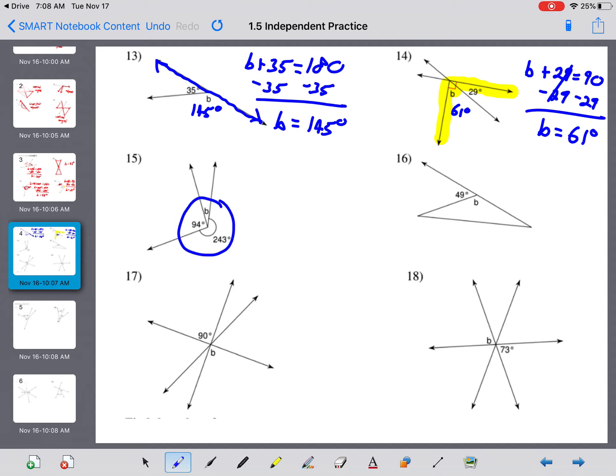Here again, we have that one with the circle. So B plus 94 plus 243 equals a total of 360 degrees. If we combine our like terms, we have 243 plus 94, which equals 337 degrees. Subtract your 337 from both sides. And B equals 360 minus 337, which gives you 23 degrees. So angle B is 23 degrees.